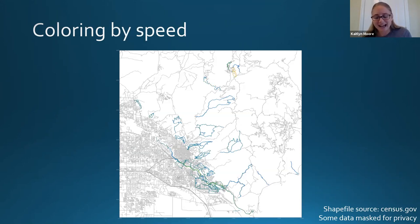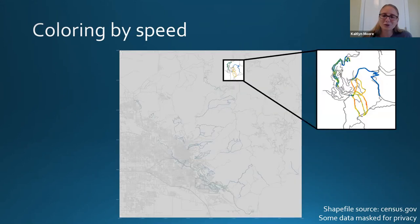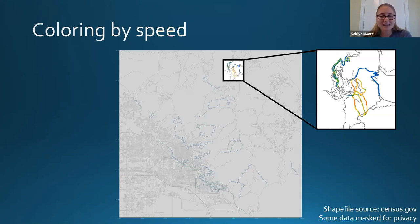Coloring by speed: I was originally a little surprised because it basically just looked like I go pretty much the same speed all the time — a whole lot of blue, a little bit of green. Then I noticed this little chunk up here, which is the Bogus Basin ski resort. It turns out I go so much faster downhill skiing than any other activity that it completely blows the scale out of proportion — you essentially just see that skiing is fast.